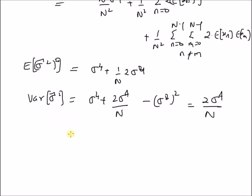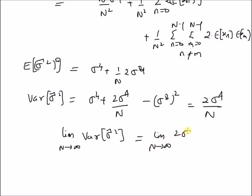Under the limit as n tends to infinity, the variance of sigma-hat squared equals the limit as n tends to infinity of 2*sigma⁴/n, which tends to zero. So in the limit, this value is zero. Hence, the sample variance estimator is a minimum variance unbiased estimator in the asymptotic sense.